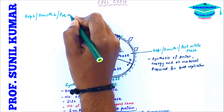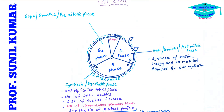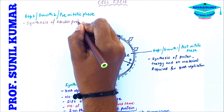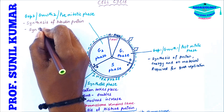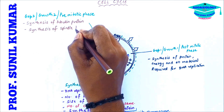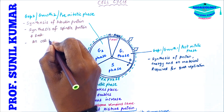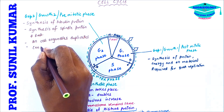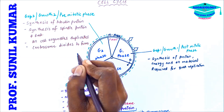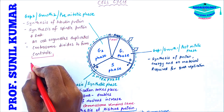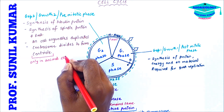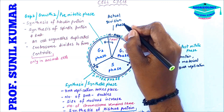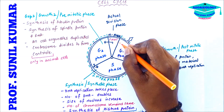In G2 phase — Gap 2, Growth 2, or pre-mitotic phase — there is synthesis of tubulin protein and spindle fibers. Since the cell is going to divide, all cell organelles must double in number, so cell organelle duplication takes place. Centrosomes divide to form centrioles, but centrioles are found only in animal cells, so in plant cell division this step is missing. Finally, the cell enters M phase, which is the actual dividing phase.